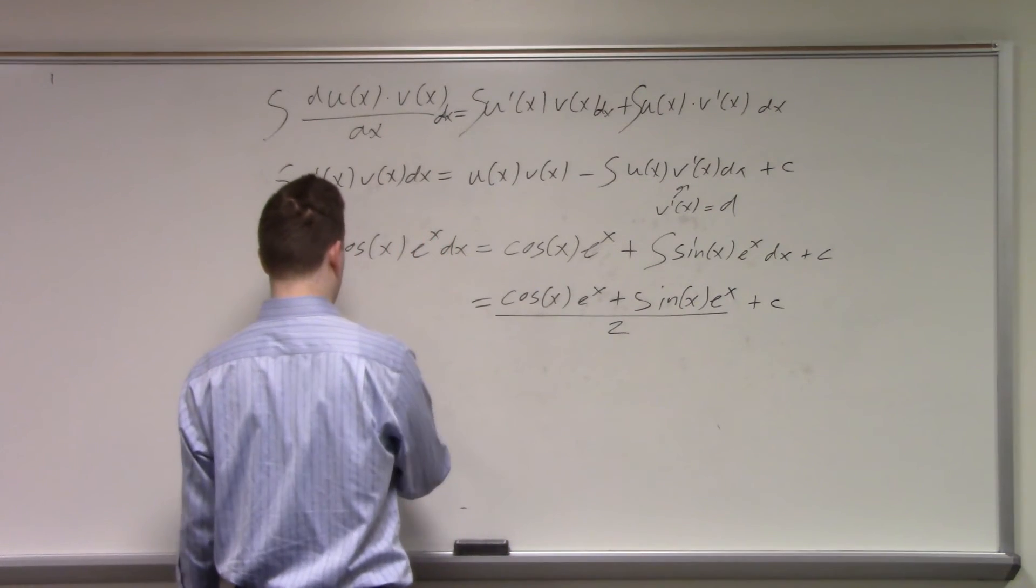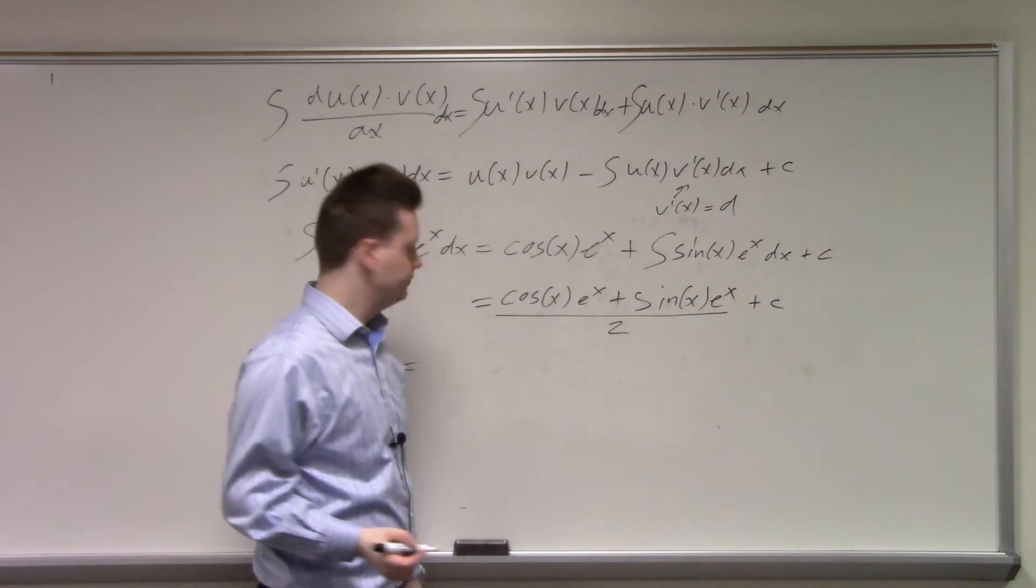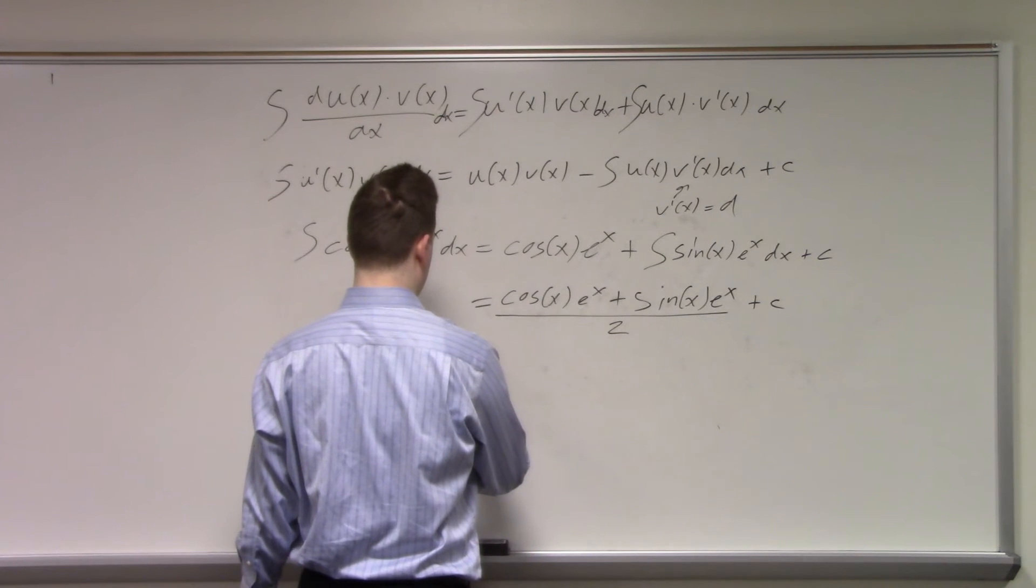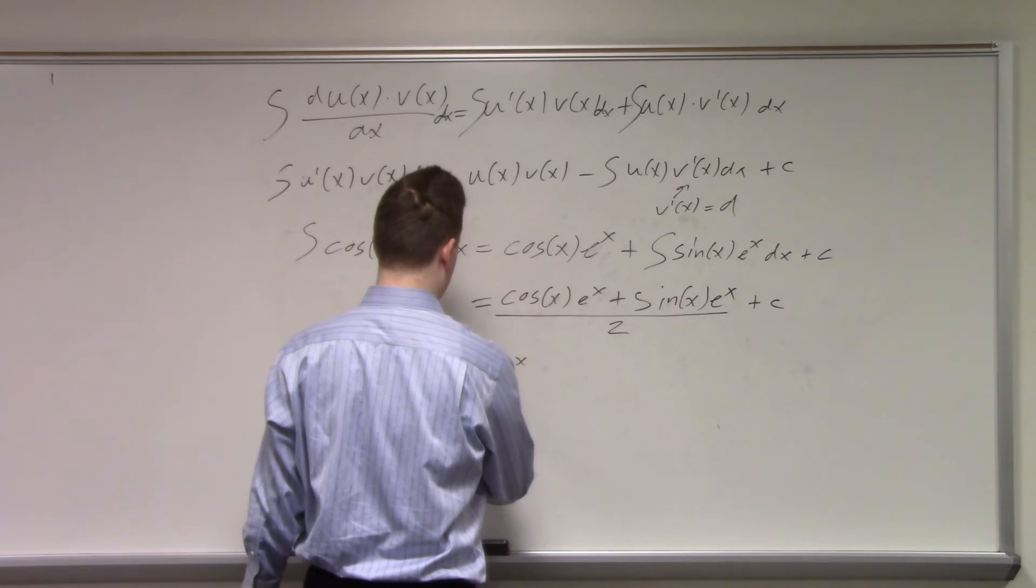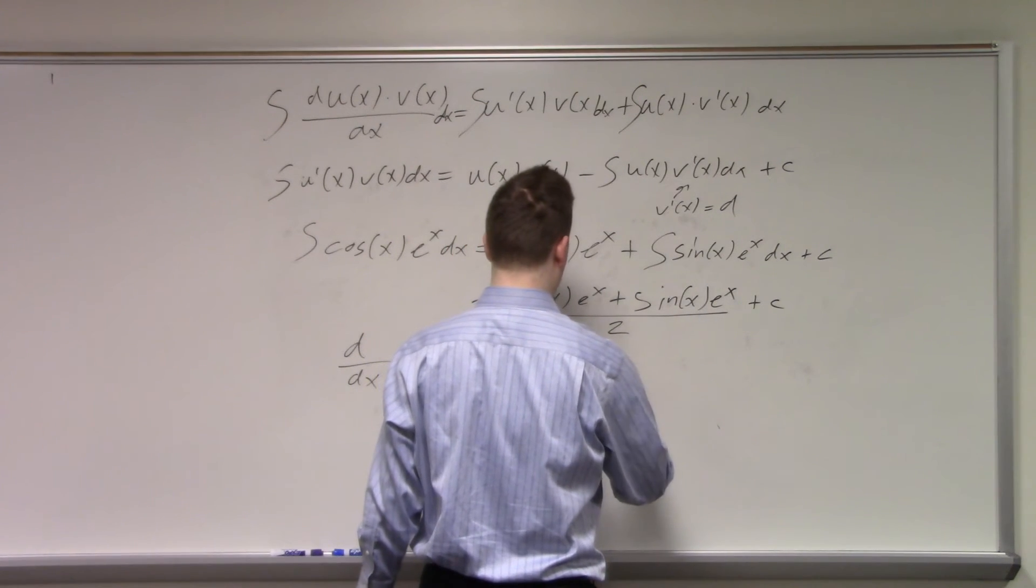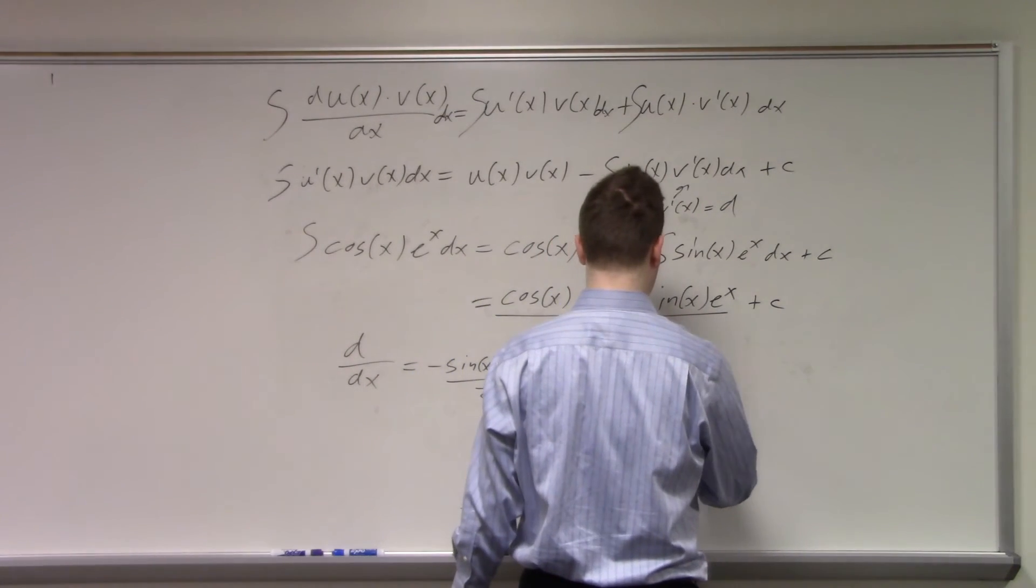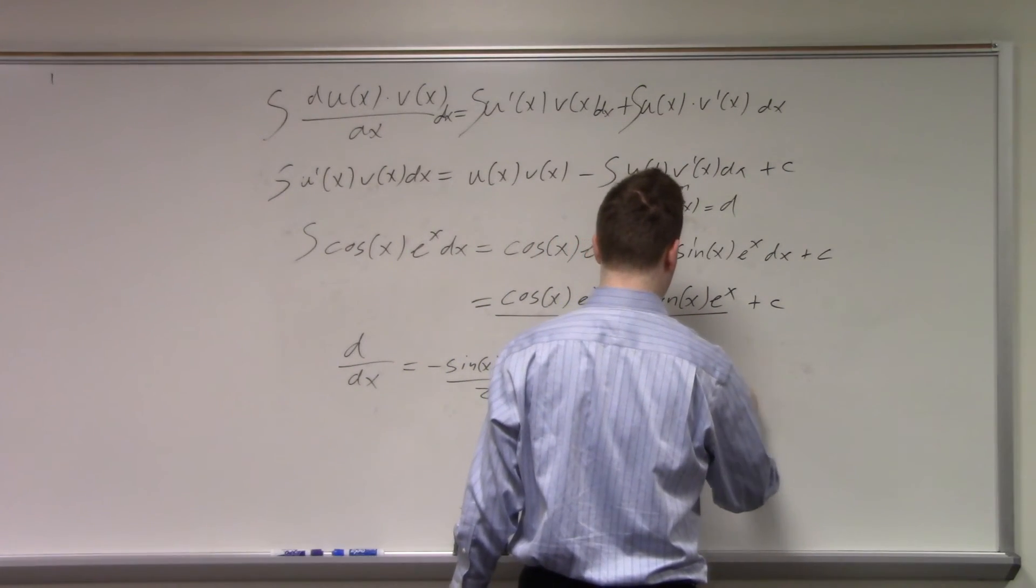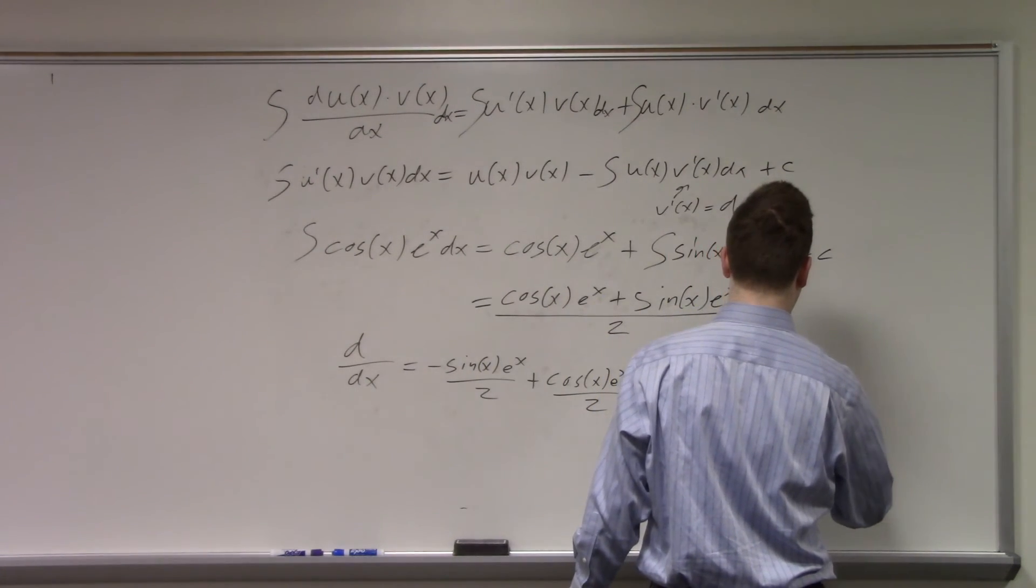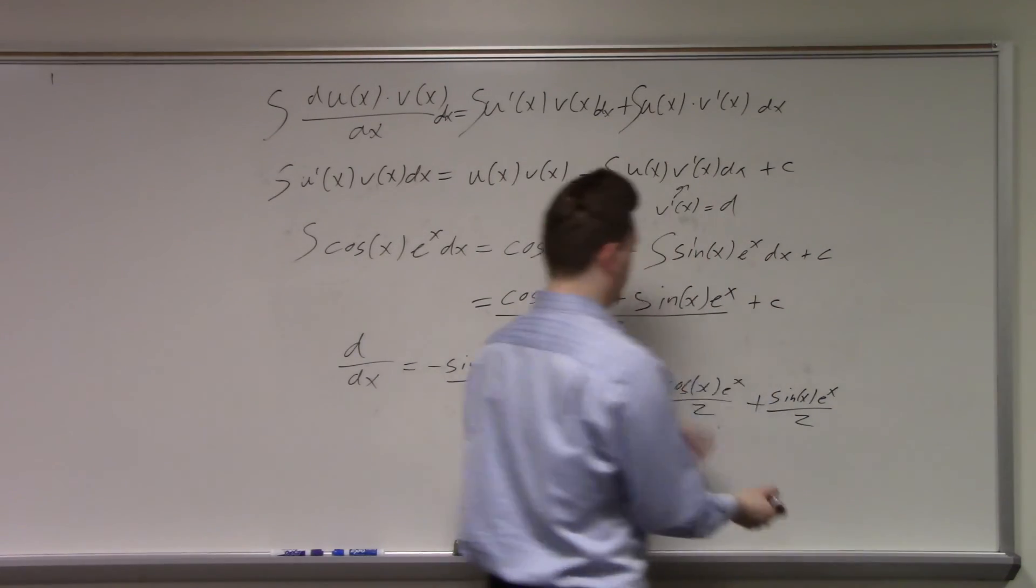Differentiate with respect to x. Again, we need to use the product rule. So we have the cosine of x that becomes minus sine(x) e^x over 2, plus cosine(x) e^x over 2, plus sine(x) e^x over 2. And the constant drops out.